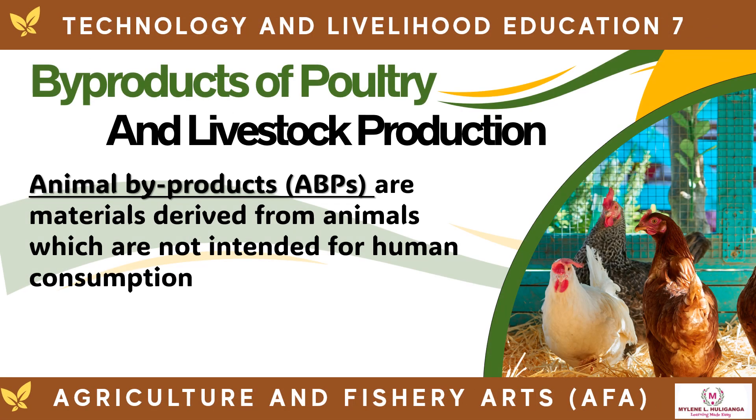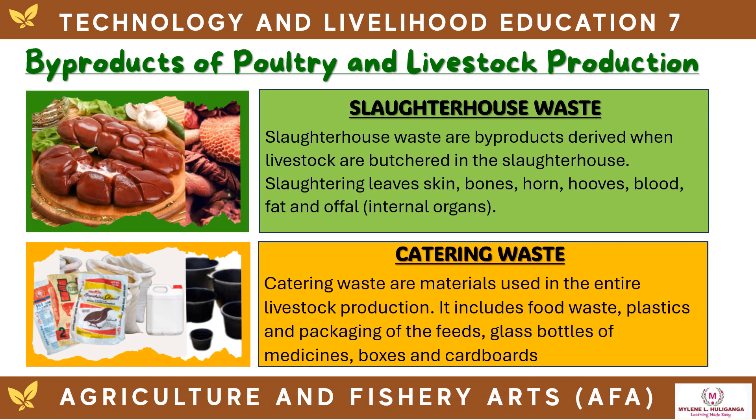Animal byproducts (ABP) are materials derived from animals which are not intended for human consumption. Slaughterhouse waste refers to byproducts derived when livestock are butchered in the slaughterhouse. Slaughtering leaves skin, bones, horns, hooves, blood, fat, and offal — the internal organs.